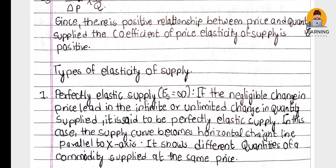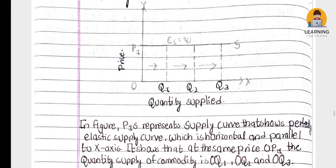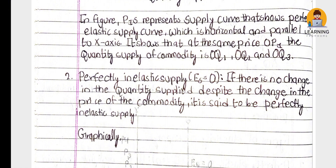The formula for price elasticity of supply is: delta Q by delta P into P by Q. For perfectly elastic supply, if there is a negligible change in price leading to an infinite or unlimited change in quantity supplied, it is said to be perfectly elastic supply. For perfectly inelastic supply, if there is no change in quantity supplied despite the change in the price of the commodity, it is said to be perfectly inelastic supply.